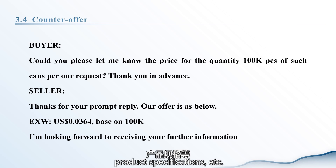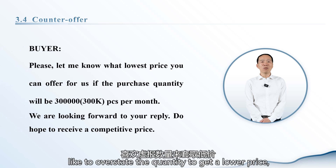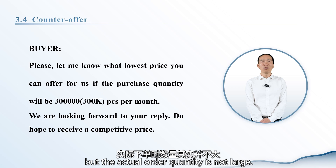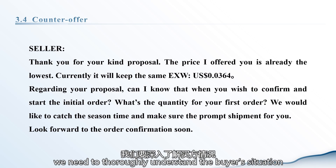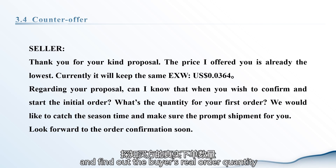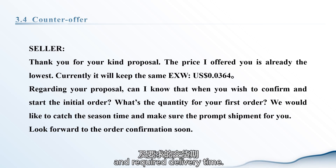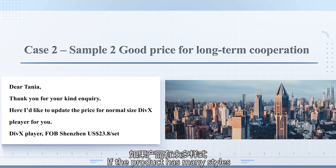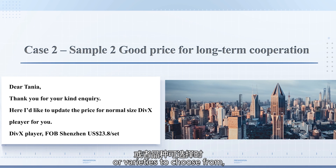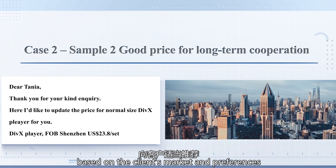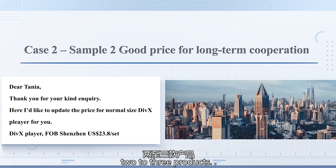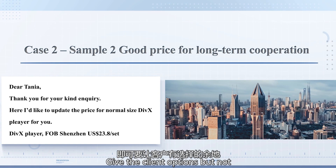Some buyers like to overstate the quantity to get a lower price, but the actual order quantity is not large. In such cases, we need to thoroughly understand the buyer's situation and find out the buyer's real order quantity and required delivery time. If the product has many styles or varieties, you can appropriately recommend two to three products to the client based on their market and preferences, giving the client options but not so many that it becomes overwhelming.